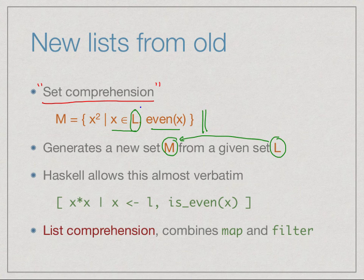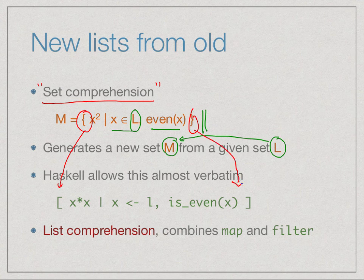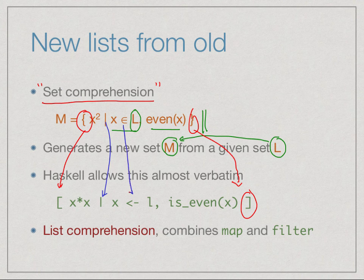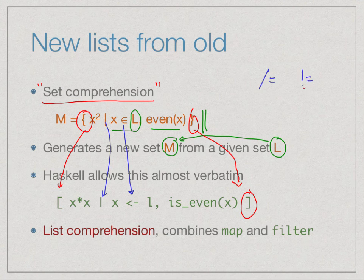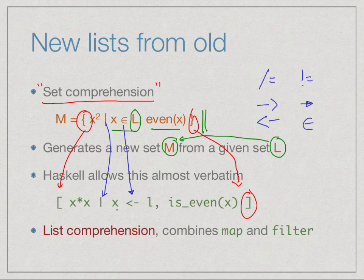Analogous to set comprehension, Haskell allows us to define lists using list comprehension. The notation looks very similar: instead of a curly bracket we have a square bracket. We have the vertical bar symbol, and for the element-of symbol we use '<-' which resembles the arrow. This says: take the elements in L, check if they are even (this is a filter), and if they are even apply x squared (this is a map).